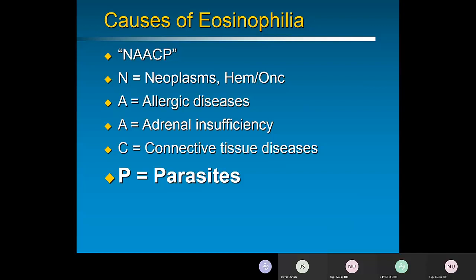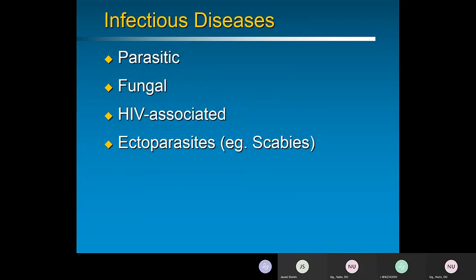Moving to parasitic and infectious causes: parasitic infection is first and foremost for eosinophilia. Fungal disease — particularly hypersensitivity scenarios with aspergillus — can be relevant. HIV patients may have eosinophilia. Ectoparasites like scabies, if severe and persistent, can drive a high eosinophil count. Generally, viruses and bacteria do not cause eosinophilia — if anything, they drive it down, as you'd expect increased lymphocytes or neutrophils during viral or bacterial infection.